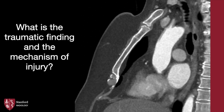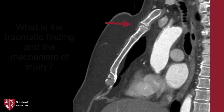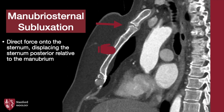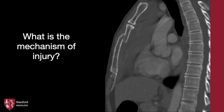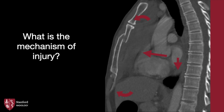In our next patient, what is the traumatic finding and what is the mechanism of injury? The sternum is mildly subluxed posteriorly relative to the manubrium; no discrete fracture line is identified. The mechanism is via direct force onto the sternum, subluxing it relative to the manubrium. In a companion case, the lower sternum is displaced anterior to the upper sternum, with a mild compression deformity of L1. This reflects an indirect force of a flexion compression mechanism, and is commonly associated with vertebral compression deformities.